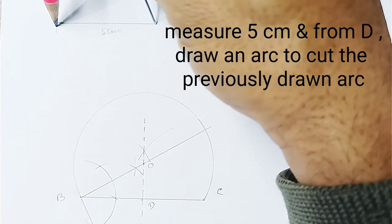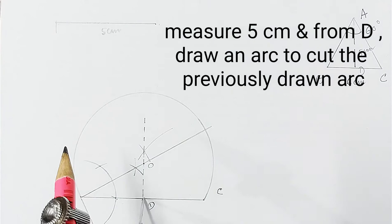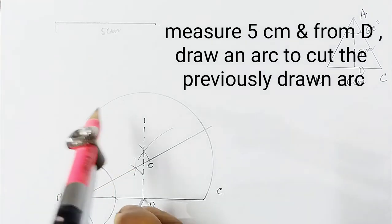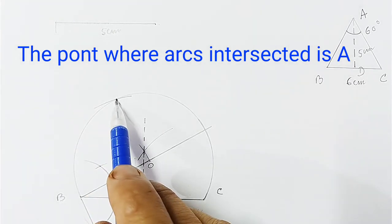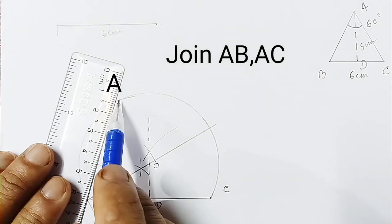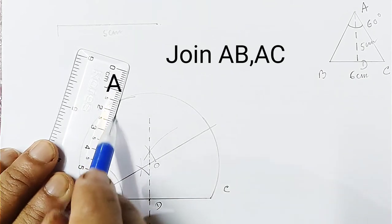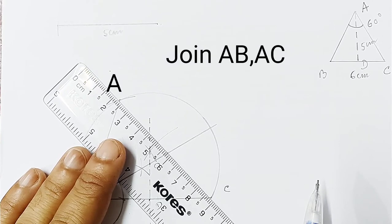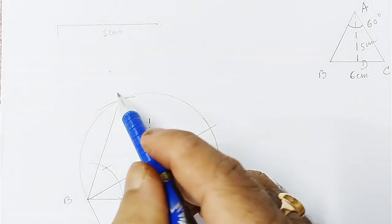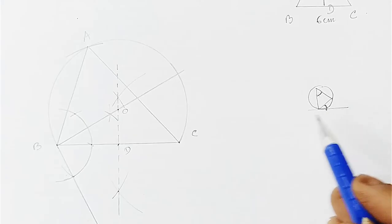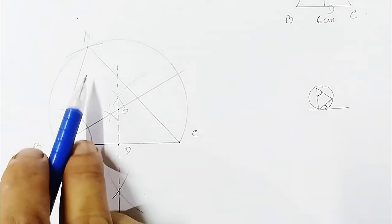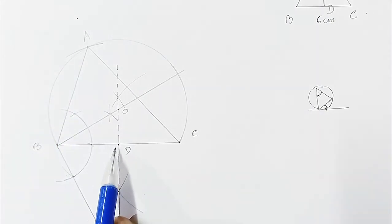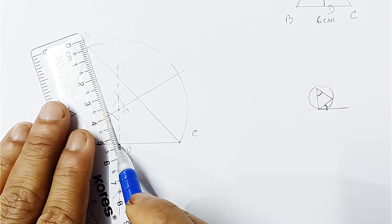Now measure 5 centimeters — the median length already drawn — and taking D as center, cut this length into the arc just drawn. The point where these two arcs intersect, mark it. Join this point with B and with C. This point is A. Using the property that the angle between a tangent and a chord equals the inscribed angle, this angle is automatically 60 degrees, BC is 6 centimeters, and median AD equals 5 centimeters.